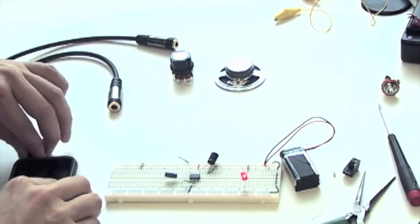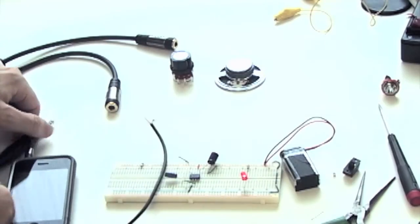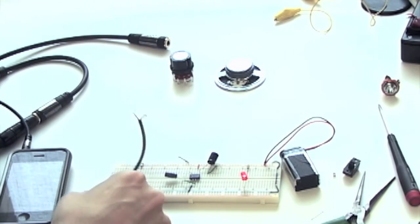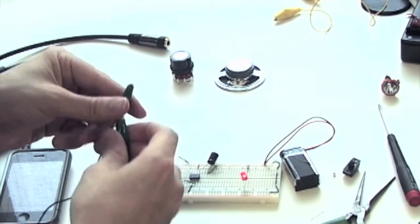Using an adapter with an 1/8-inch connector on one end and bare wires on the other, we can connect an iPhone or other line-level source to alligator clips. Let's use a green clip for signal and a black clip for ground.